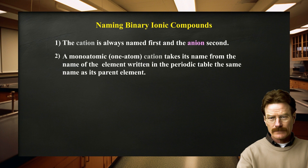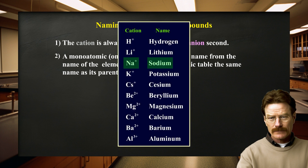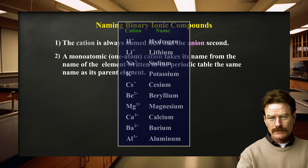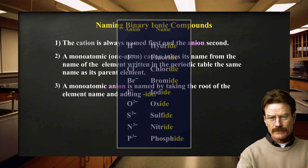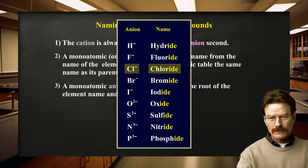A monoatomic cation — meaning one atom — takes its name from the name of the element in the periodic table, the same name as its parent element. For example, Na+ is called sodium in the names of compounds containing this ion. A monoatomic anion is named by taking the root of the element name and adding -ide. Thus, the Cl− ion is called chloride.